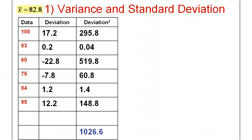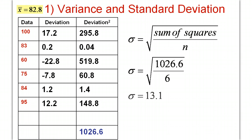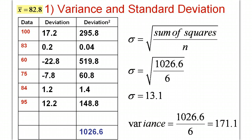That's pretty close, so we're good. When we calculated the standard deviation, we got very close to 13.1. Now let's talk about variance since we're being asked for it. The variance is that part just before you take the square root. I could get the variance by squaring the standard deviation, but since I've rounded it, that would magnify the error. It's better to go back to 1026.6 divided by 6 and use that for the variance instead of squaring 13.1.